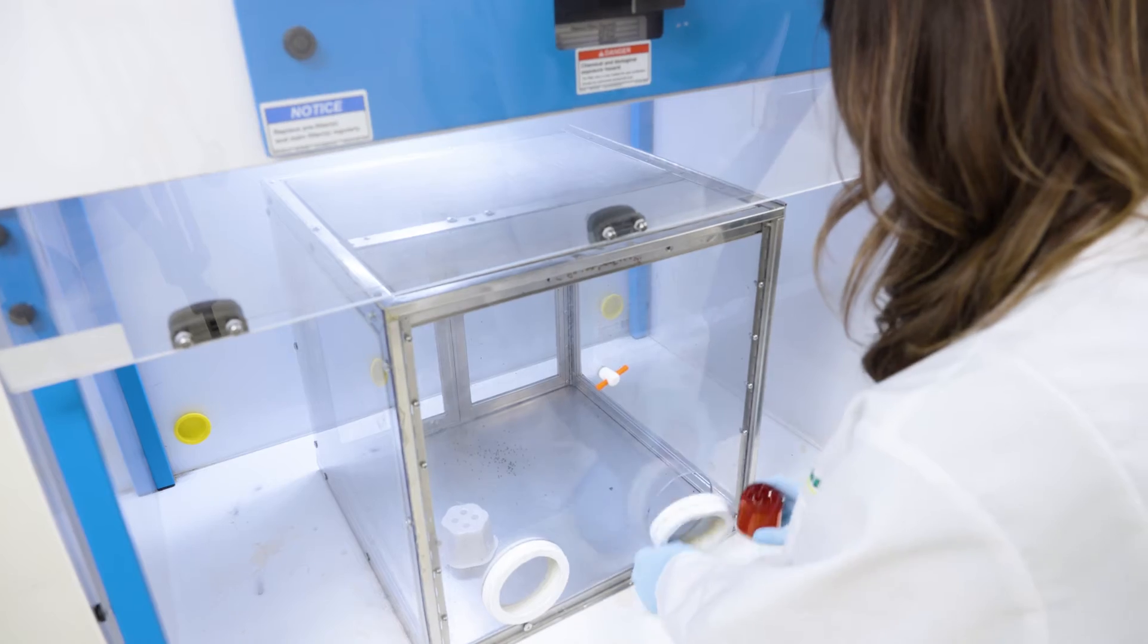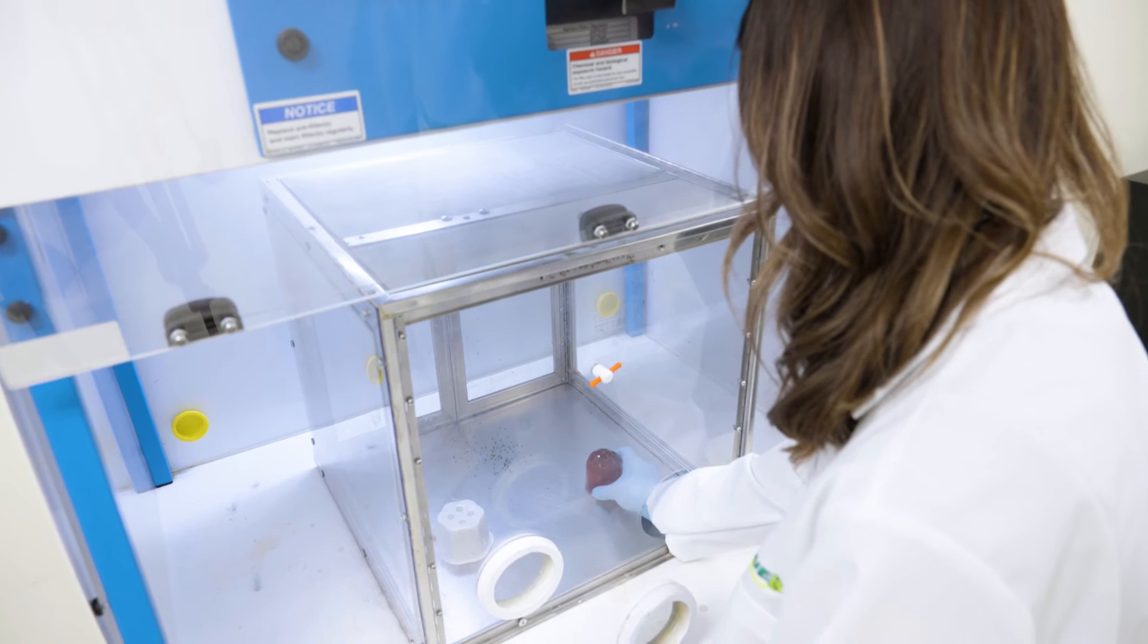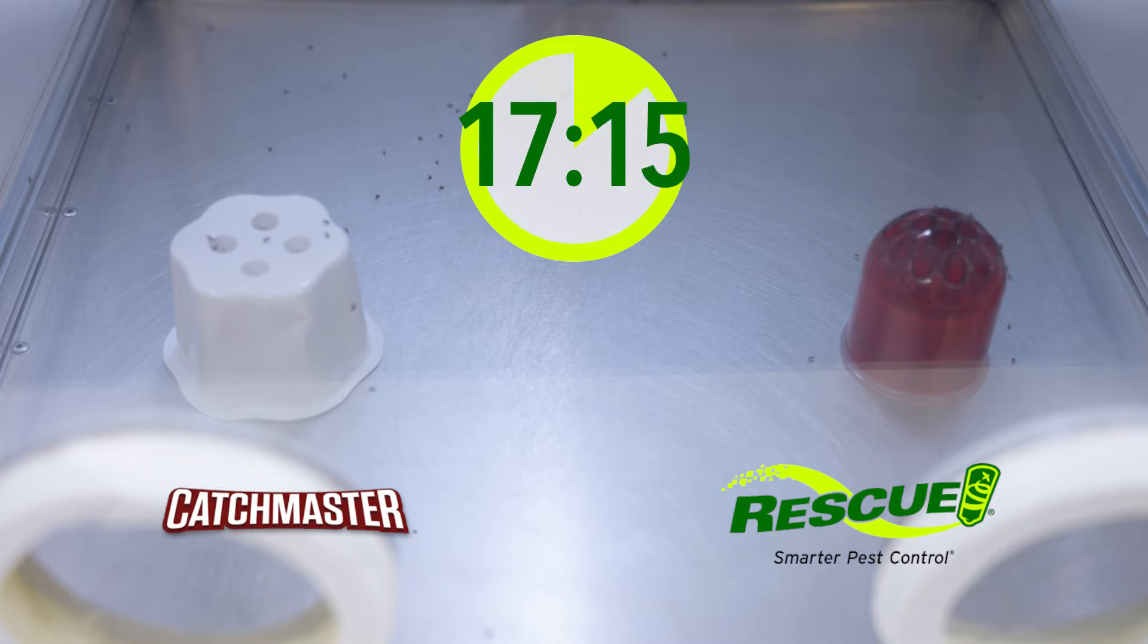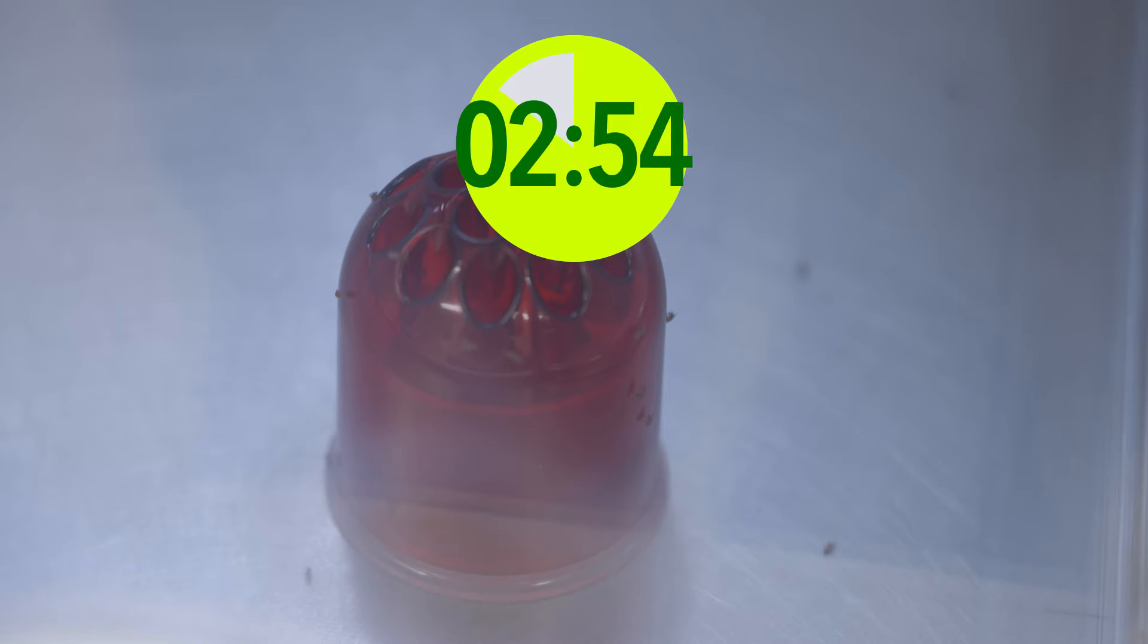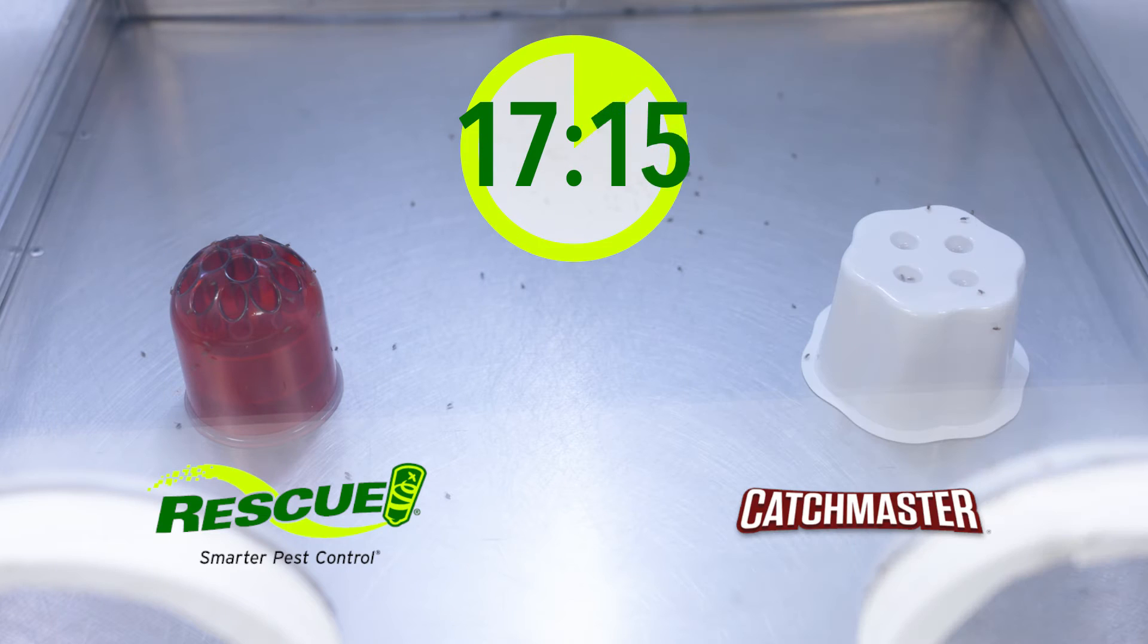The traps are then placed in the cage and testing is conducted for 20 minutes. For the next replicate, I switch the positions of the traps to eliminate any positional bias.